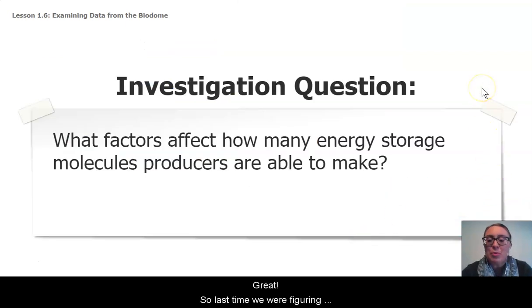So last time we were figuring out this question around what factors affect how many energy storage molecules producers are able to make. And we realized that producers are the ones that really can control how many energy storage molecules are in an ecosystem because producers are the ones making these energy storage molecules during that process of photosynthesis. And if we were going to change the output or the product of photosynthesis chemical reaction, then I really need to consider the inputs or the reactants that go into that process.